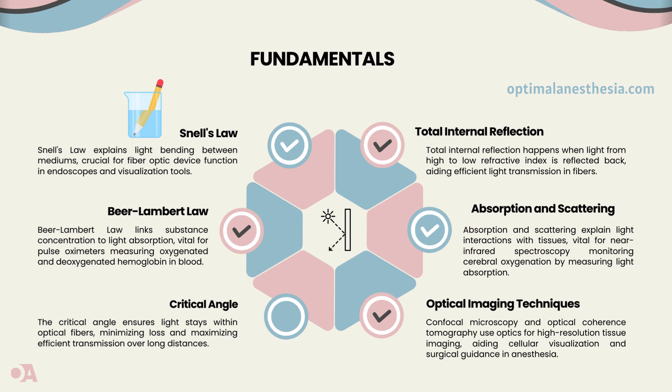The Beer-Lambert law is like a formula for monitoring oxygen levels. It tells us how much light is absorbed by different forms of hemoglobin in the blood, helping us measure oxygenation accurately using pulse oximeters.